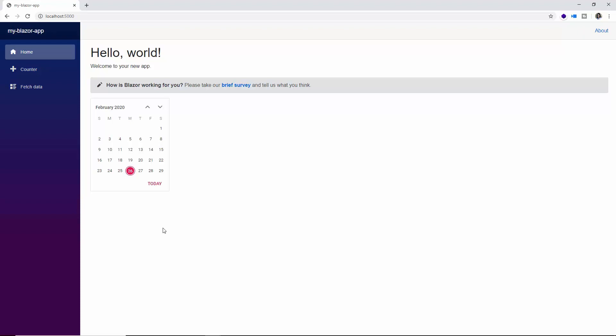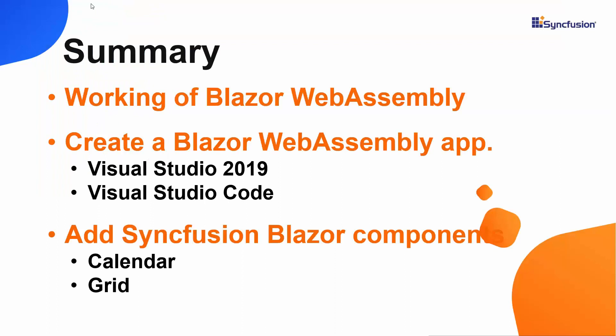As Blazor WebAssembly is still in a preview state, we keep making parallel progress with every Microsoft update. We hope to mark our Blazor components for WebAssembly as final and production-ready by May 2020, as per Microsoft's current launch plan. To summarize: we saw how the Blazor WebAssembly app works, how to create one using Visual Studio 2019, how to add Syncfusion Blazor components like Calendar and Grid, and how to create the same app using Visual Studio Code.